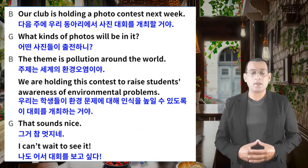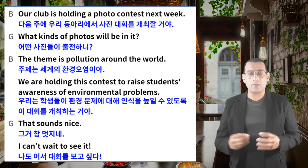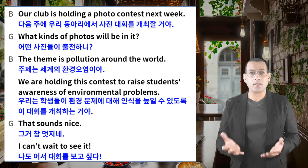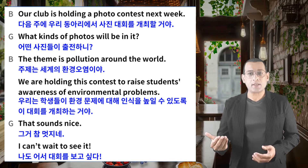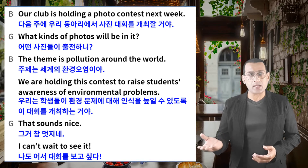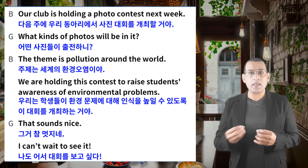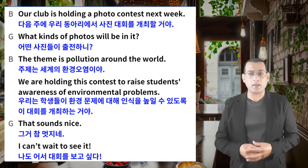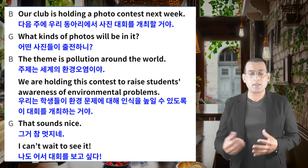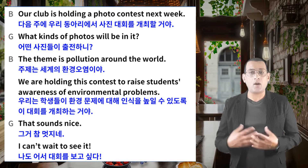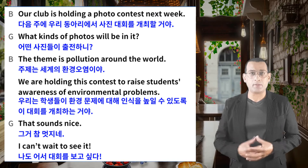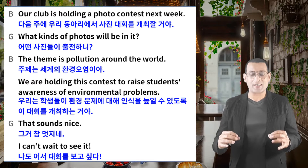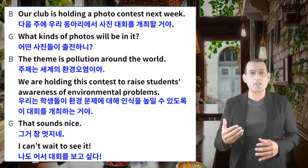So let me walk you through the dialogue. The boy says: our club is holding a photo contest next week. And the girl says: what kinds of photos will be in it? And the boy says: the theme is pollution around the world. We are holding this contest to raise students' awareness of environmental problems. And the girl says: that sounds nice. Our pattern dialogue is there — it says: I can't wait to see it.